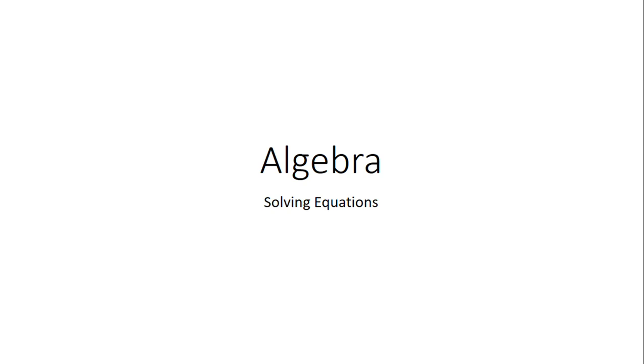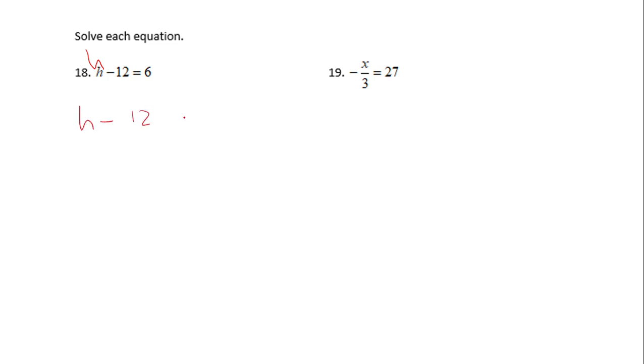Welcome to C-Squared. Today we're going to discuss solving equations. Let's see the first two problems. I'm going to start with number 18, which says h minus 12 equals 6. In order to solve an equation, we need to undo the steps.